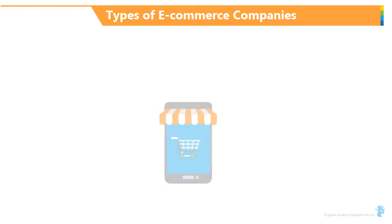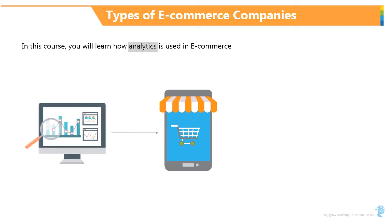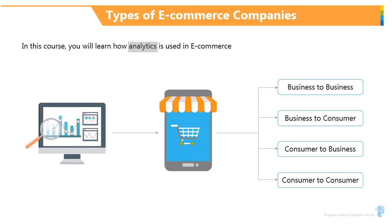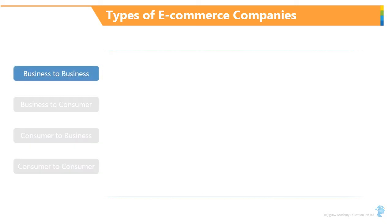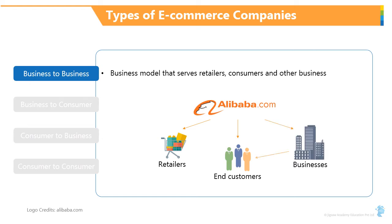My next slide is about the types of e-commerce companies. Please note that this course is majorly about e-commerce and how analytics is used in it, though a lot of the concepts can actually be applied to other digital setups as well. Based on what they offer, e-commerce businesses can be classified into four different buckets. The first one being B2B, business to business — example, Alibaba, the Chinese giant which sells to other small retailers as well, serving other businesses which in turn serve customers.